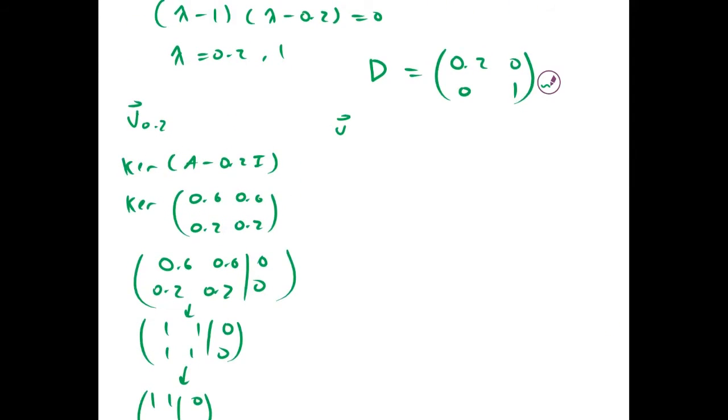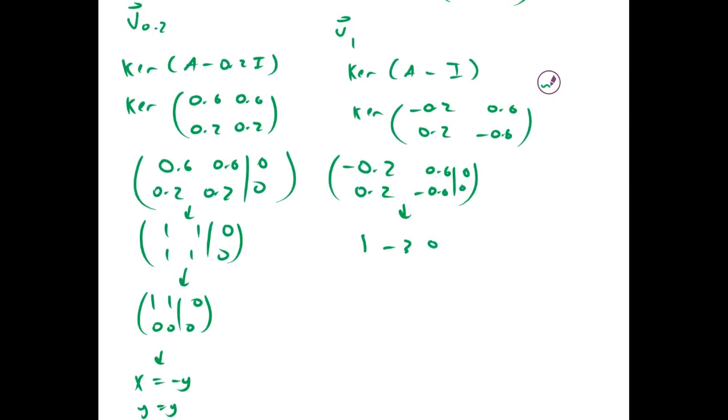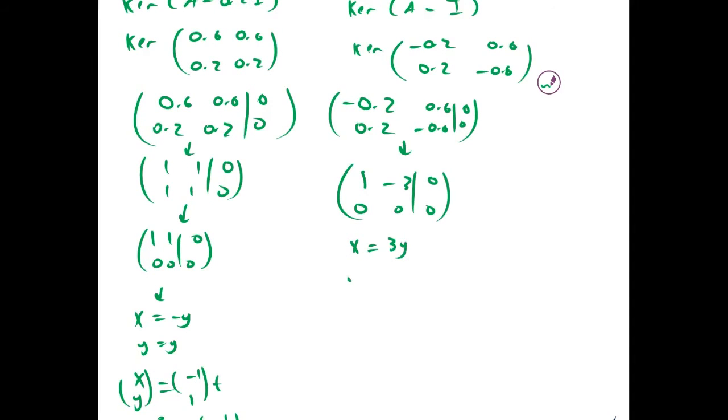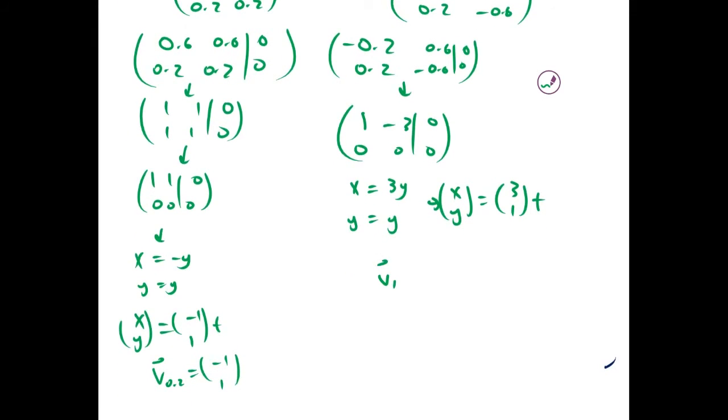If we're looking for v₁, we take the kernel of A minus 1·I, which is the kernel of (-0.2, 0.6; 0.2, -0.6). Row reducing gives us (1, -3; 0, 0), which tells us x equals 3y, y equals y. So (x, y) is a multiple of (3, 1). Therefore v₁ equals (3, 1).